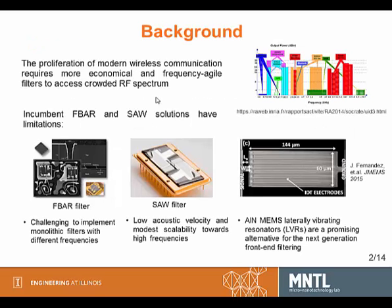I would like to start by introducing the background of this work. The proliferation of modern wireless communication requires more economical and frequency-agile filters to access the crowded RF spectrum. Existing FBAR and SAW solutions have limitations — FBAR makes it very difficult to implement monolithic filters with different frequencies, and SAW has issues of low phase velocity and modest scalability towards high frequencies. Instead, aluminum nitride laterally vibrating resonators are very promising candidates for the next generation front-end filtering.